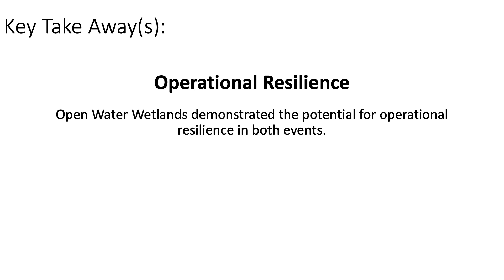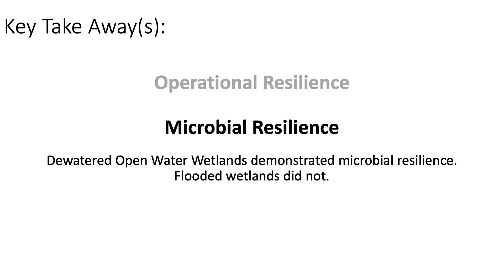Now the key takeaways from the investigation. Open-water wetlands demonstrated potential for operational resilience in both disruption events. Rehydrated biomat appears to attenuate nitrate at a similar rate as the consistently hydrated biomat. Following a flood, the nitrate removal rate appears to be degraded; however, performance does provide flexibility for operators to evaluate and triage damage and make repairs. With respect to microbial resilience, open-water wetlands responded to each type of disruption differently. Rehydrated biomat demonstrates microbial resilience given that the differences between rehydrated and constantly hydrated communities were not significant. Flooded biomat displayed limited microbial resilience, instead becoming significantly different from both nascent and mature biomat.